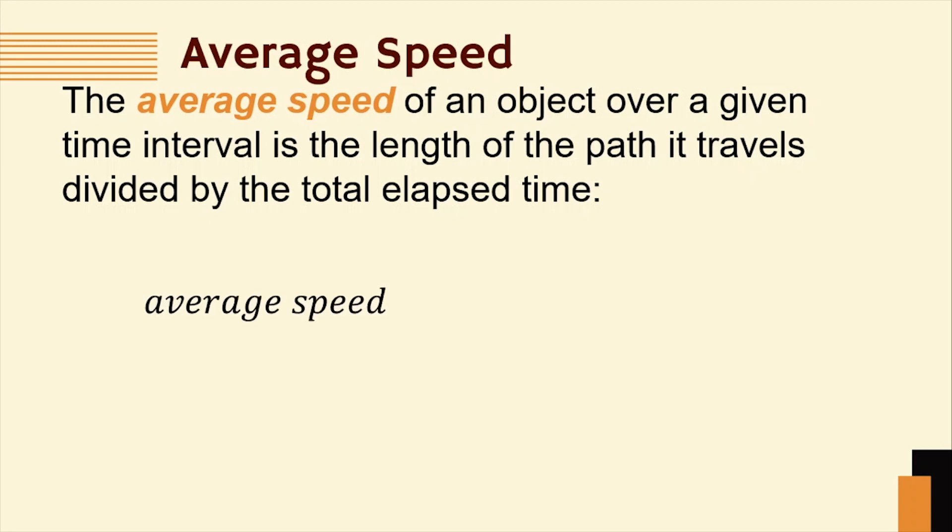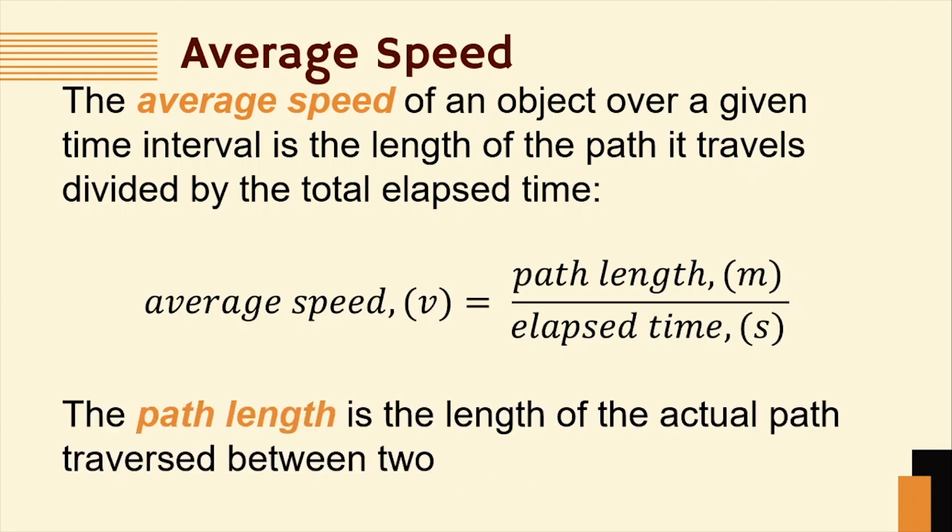Mathematically, average speed equals path length in meters over elapsed time in seconds. Small letter v is the symbol we use to denote average speed. The path length is the length of the actual path traversed between two points.